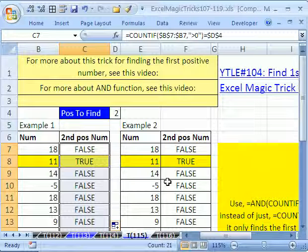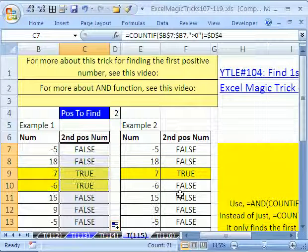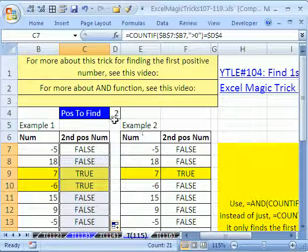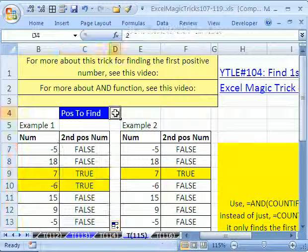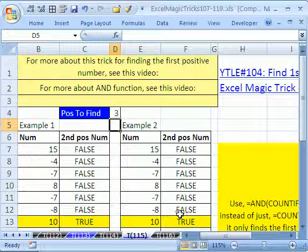If I hit F9 to randomize, I can see that it's still getting the second value, but if I change this to three, sure enough, it's jumping. There's the true. That's one positive, two positive, and it gets the third positive right there.